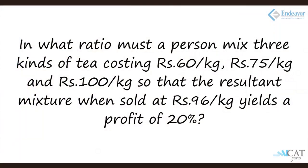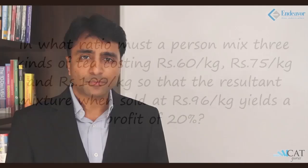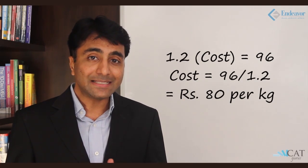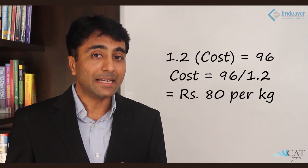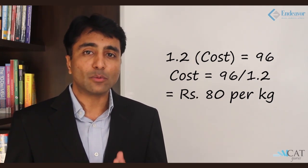What if we have to mix more than 2 different quantities and find a mixture? Let us take an example where I have 3 types of tea costing Rs 60 per kg, Rs 75 per kg, and Rs 100 per kg, and I need to mix them such that selling the mixture at Rs 96 per kg yields a profit of 20%. Note that Rs 96 is the selling price. Since it has 20% profit, 1.2 times the cost price equals 96, giving a cost price of Rs 80 per kg. So I am mixing 3 teas costing Rs 60, Rs 75, and Rs 100 to produce a mixture costing Rs 80 per kg.